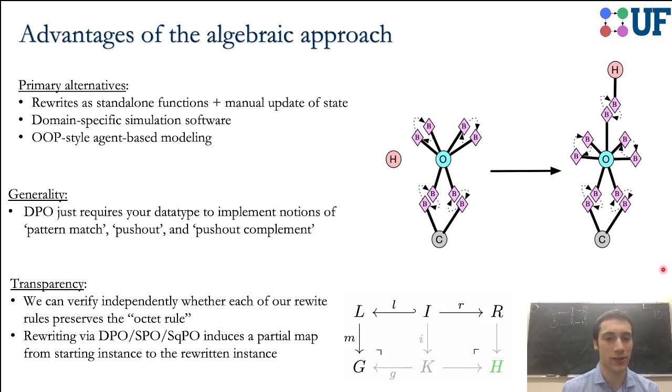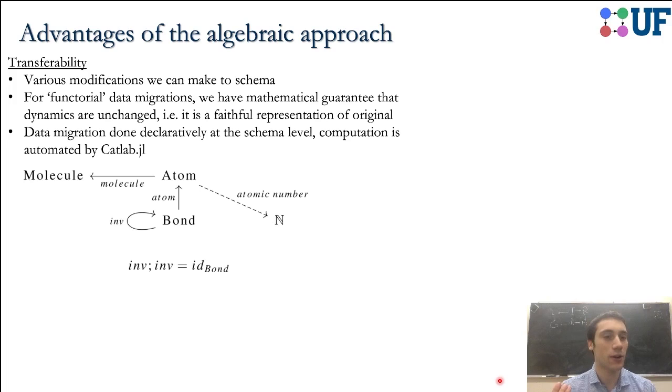Furthermore, we get extra interpretability about our results because this system actually induces a map from our state, let's say state at time n to our state at time n plus one. We actually have a way of relating those two states and a record of the provenance of our rewritten result. I'll lastly talk about transferability, where we can make modifications to our schema and actually migrate our data, including our rewrite rules, from old schemas into new schemas. This is a feature that Catlab offers.